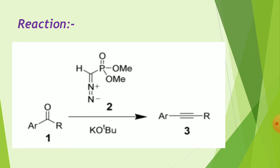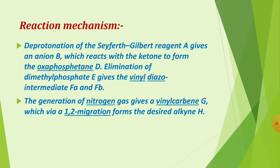In the reaction: first the aromatic ketone is taken, then the reagent is added, then potassium tert-butoxide (a base) is added, and the product formed is an alkyne. The reaction mechanism begins: deprotonation of the Seyferth-Gilbert reagent gives an anion B, which reacts with the ketone to form the oxyphosphonate intermediate.